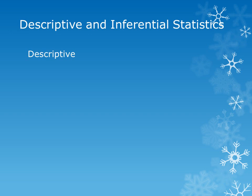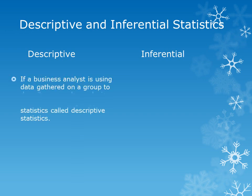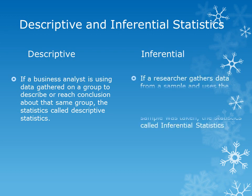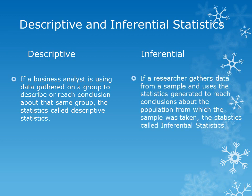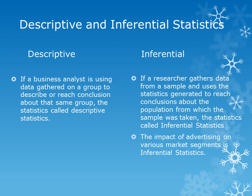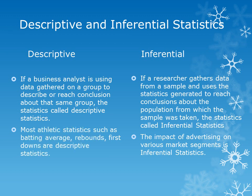There are two types of statistics: descriptive statistics and inferential statistics. If a business analyst is using data gathered on a group to describe or reach conclusions about that same group, the statistics are called descriptive statistics. In inferential statistics, data gathered from a sample is used to generate conclusions about the whole population. Most athletic statistics such as batting average, rebounds, and first downs are descriptive statistics, while something like the impact of advertising on various market segments is inferential statistics.